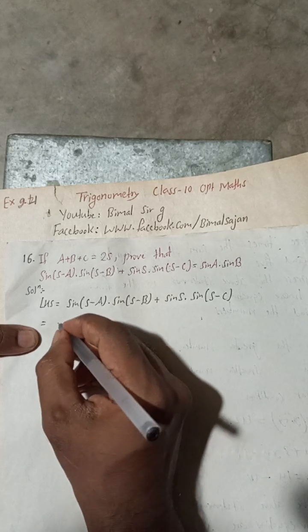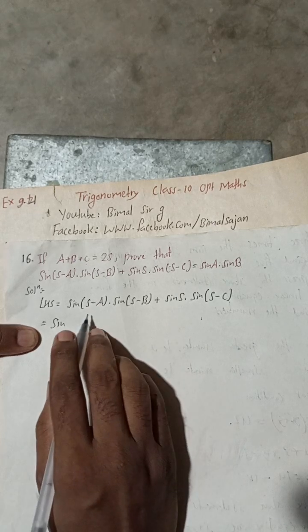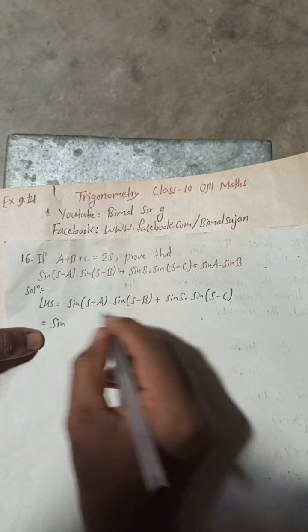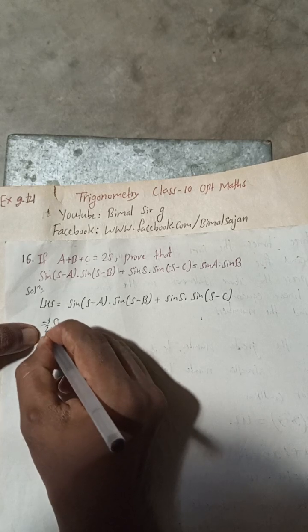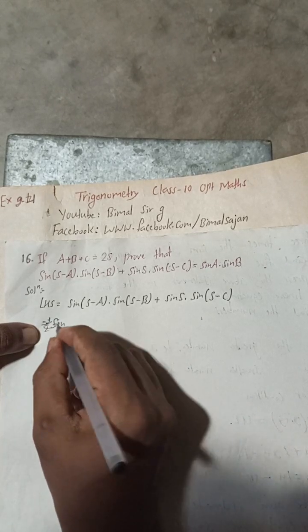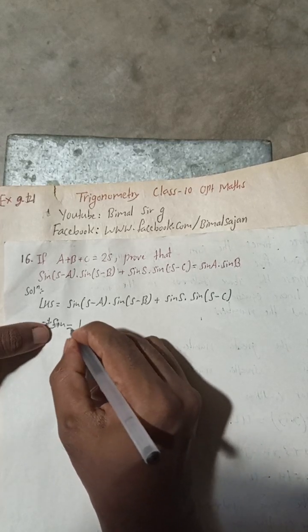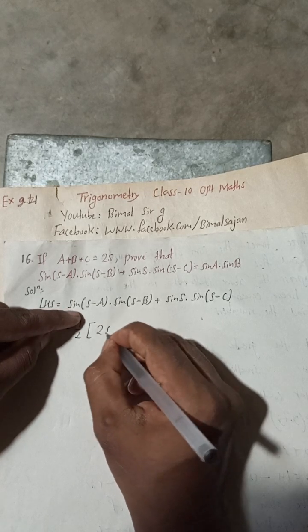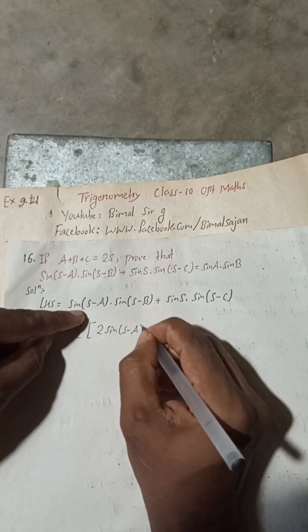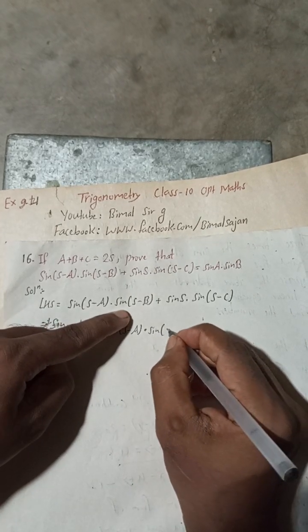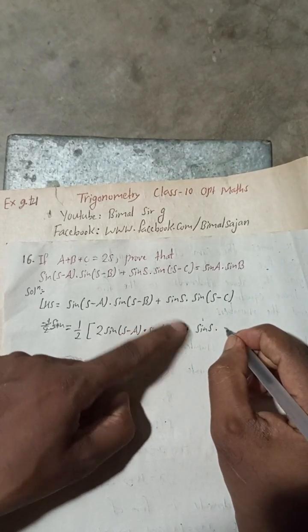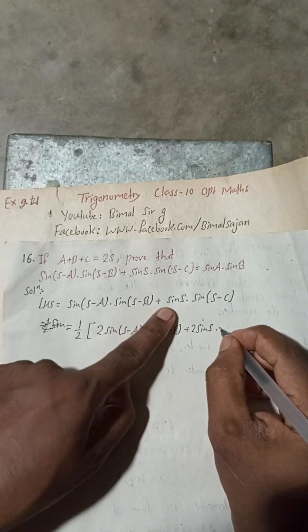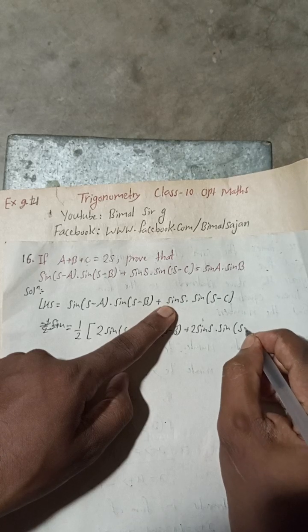Taking the LHS, I will multiply by 1/2 outside — that is, divide by 1/2 — and multiply by 2 inside. So this becomes 2·sin(s−a)·sin(s−b) plus 2·sin(s)·sin(s−c), with the overall 1/2 factor in front.